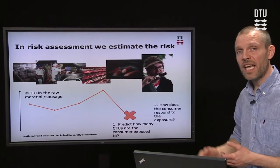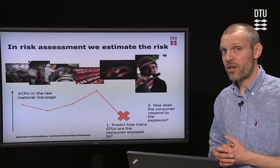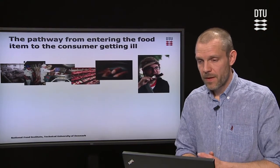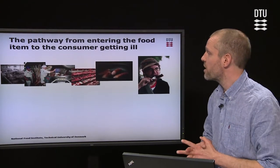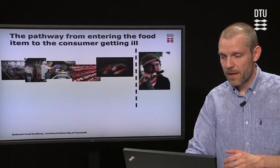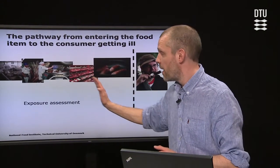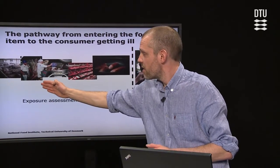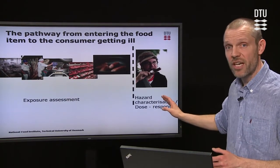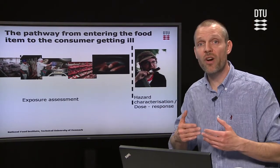We also have to consider what is happening in the consumer, because the consumer is the endpoint in microbiological risk assessment. The pathway from the pathogen entering the food to the consumer getting ill is normally split into two elements: exposure assessment, dealing with the hazard in the food item until consumption, and hazard characterization or dose response, which looks into what is happening in the consumer after consumption.